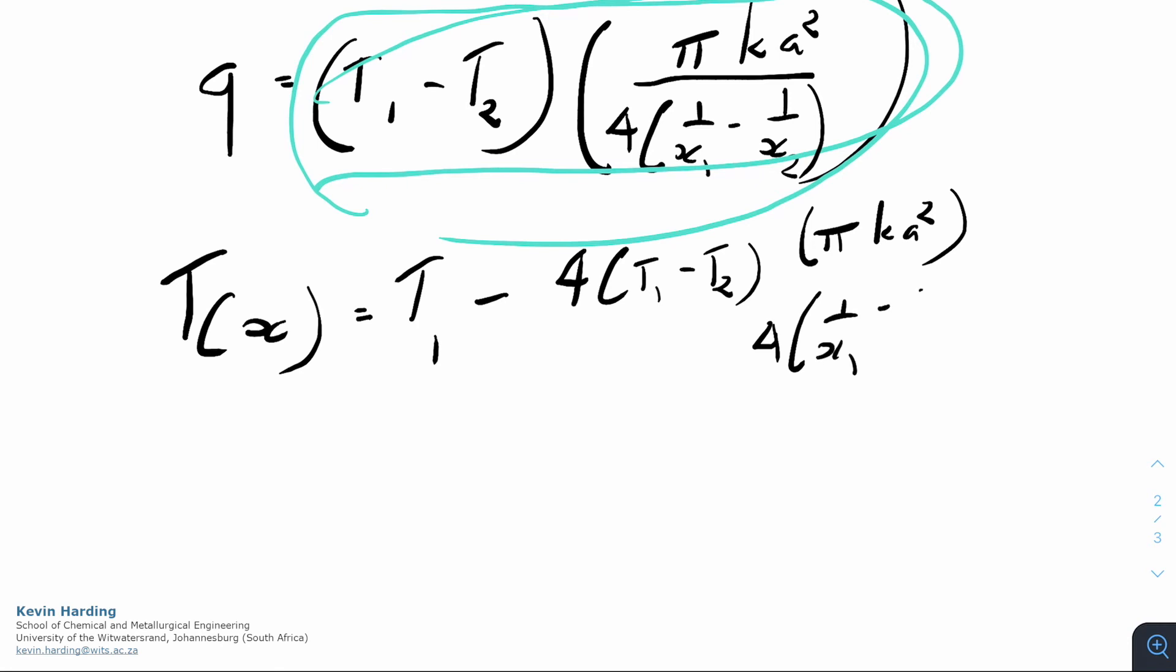1 on x1 minus 1 on x2, that's all divided through. That q was then divided by pi k a squared, which was then multiplied. The whole thing was multiplied by 1 on x1 minus 1 on x.